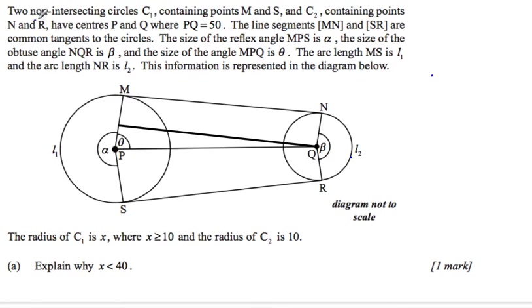In this example, we have two non-intersecting circles C1 containing points M and S, and C2 containing points N and R. They have centers at P and Q, where PQ is 50, so this length here is 50.